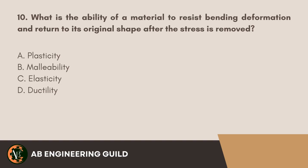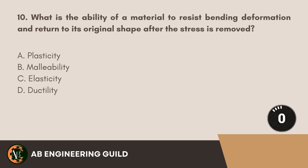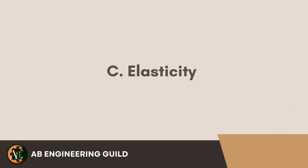Question 10: What is the ability of a material to resist bending deformation and return to its original shape after the stress is removed? A. Plasticity. B. Malleability. C. Elasticity. D. Ductility. Answer: C. Elasticity.